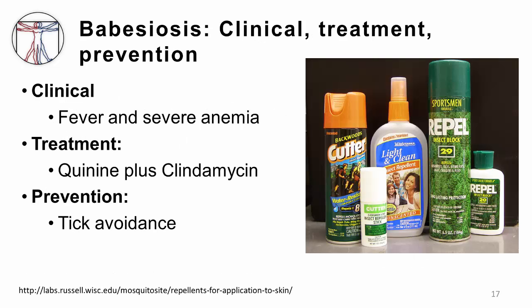Clinical manifestations: a lot of people will be asymptomatic, but when they're symptomatic, people can have fever, also severe anemia, and it can progress even to septic shock and multi-organ system failure in immunocompromised patients. Treatment tends to be quinine plus clindamycin, and prevention is with tick avoidance, with DEET, permethrin, et cetera.